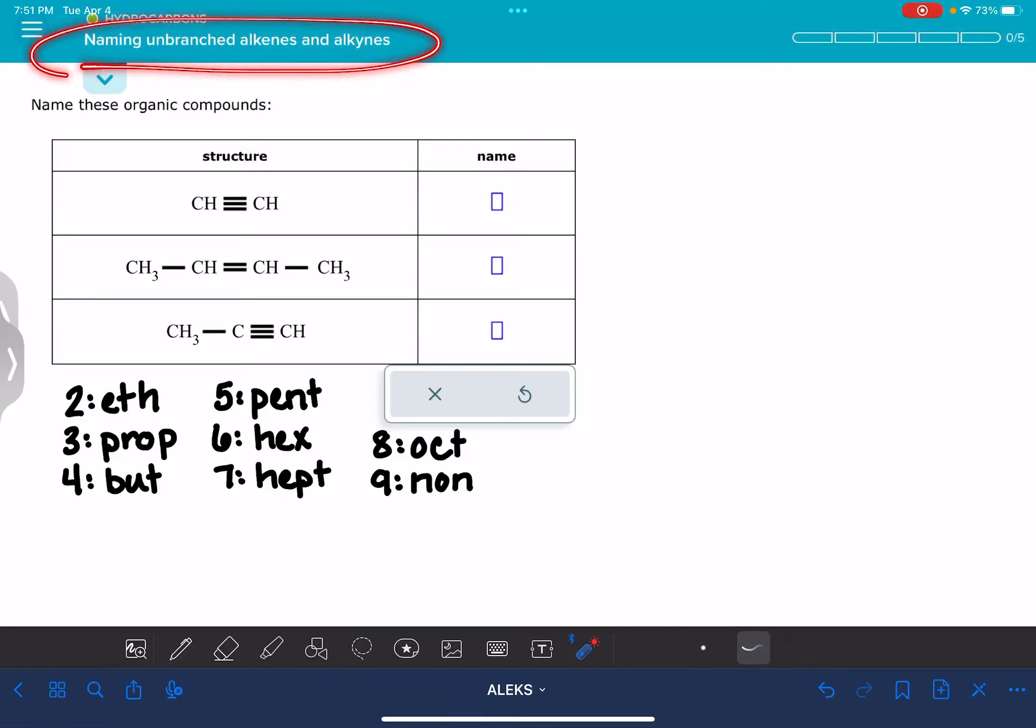In this video, we're going to work on the ALEKS problem called naming unbranched alkenes and alkynes. This problem is going to give you three different molecules. Some of them will be alkynes, some of them will be alkenes, and you have to come up with their name.